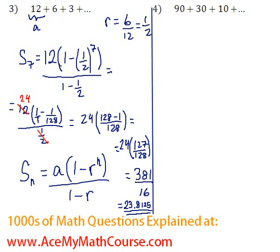Now let's do question number 4. Same formula, right? We're going to be doing S7 is equal to now A is 90 times 1 minus. What is R? R will be 1 third. Because we can just take the 30 divided by 90.